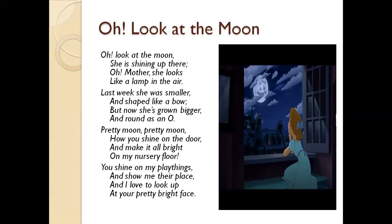The poet is represented as a little girl who is talking to her mother. This little girl is saying, 'Mom, look at the moon, she is shining up there.' We see the moon up in the sky and it is very shining. 'Oh mother, she looks like a lamp in the air' — she is saying the moon looks like a lamp suspended in the air.